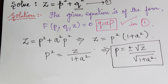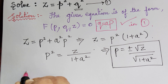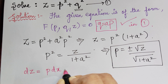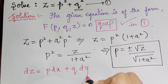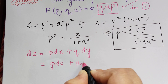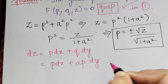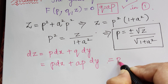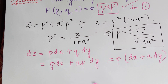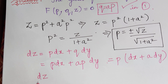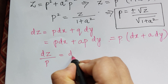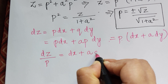Now we shall make the substitution of p and q in dz equal to p dx plus q dy. Here p dx plus q — and q is ap — so ap dy. Taking p common, we have dx plus a dy, and from this we get dz divided by p equal to dx plus a dy.